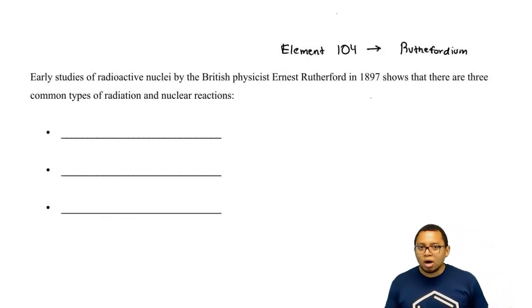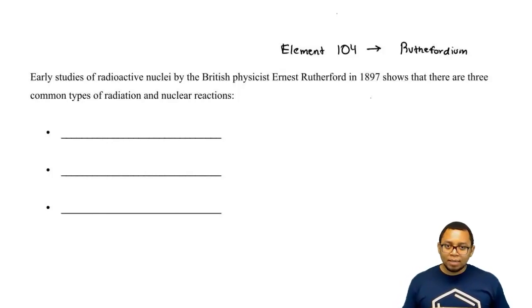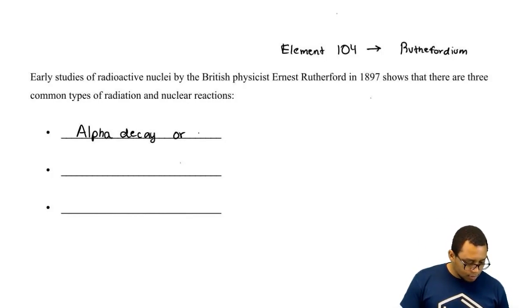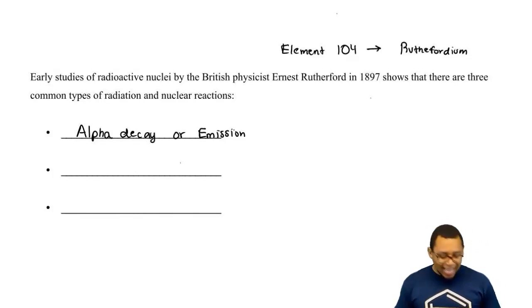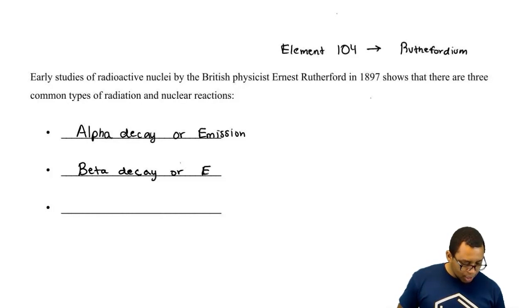So it's kind of an homage to all the work that he's done in terms of this field. Now, Rutherford basically broke down nuclear reactions into three major types of categories. We have alpha decay, and you may hear instead of alpha decay, you may hear alpha emission. We also have beta decay, which you may also hear as beta emission.